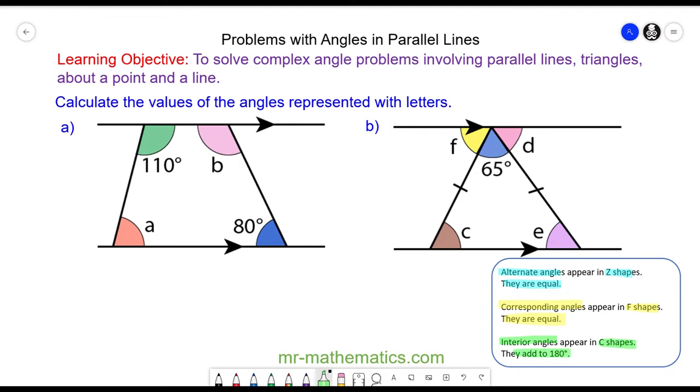So we're going to apply these angle properties to calculate the size of angle A and angle B. We can see that angle A is interior with a green 110 degree angle, so they must add up to 180 degrees. So angle A plus 110 degrees is equal to 180 degrees. We can take away the 110 from both sides. So angle A will be equal to 70 degrees.